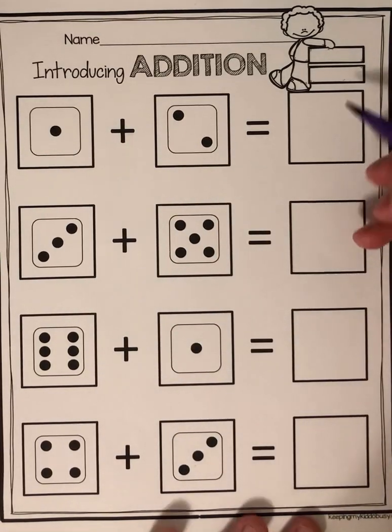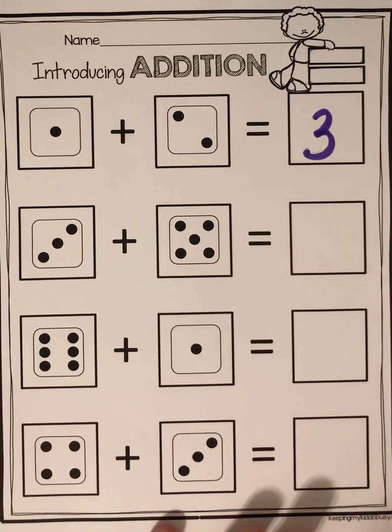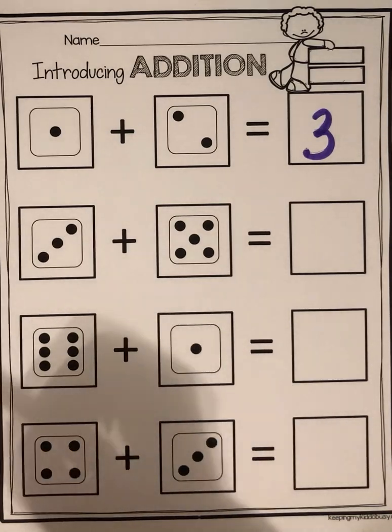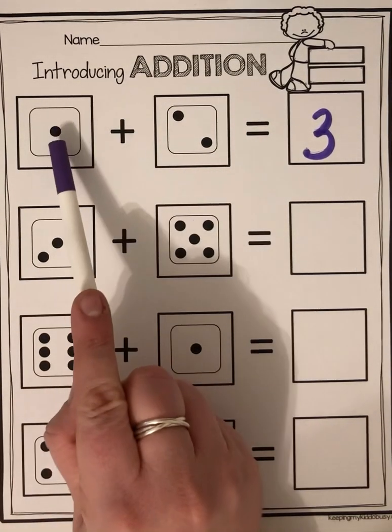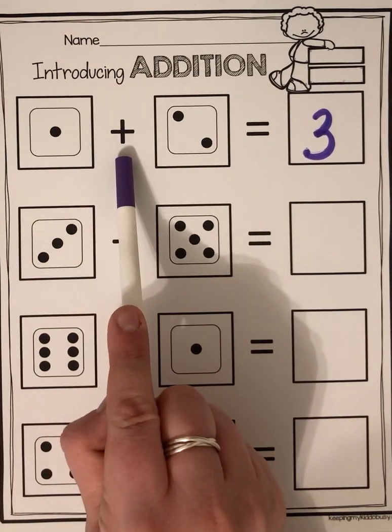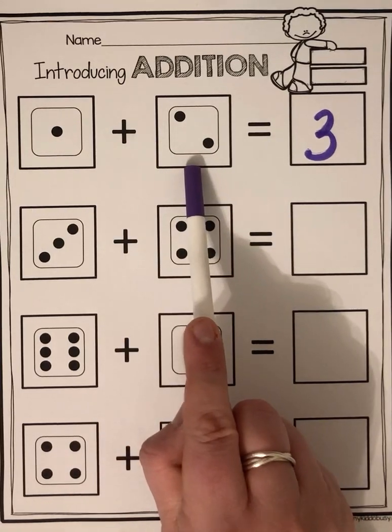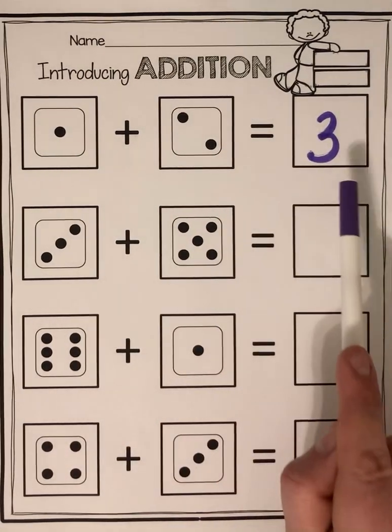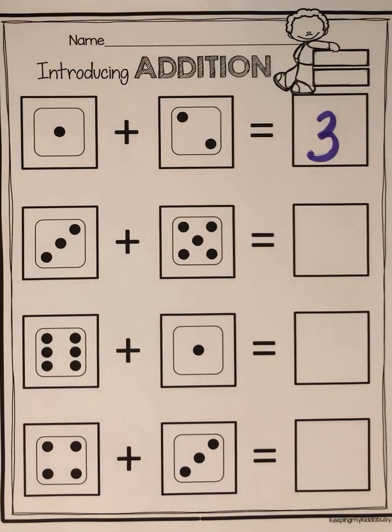If you said three, you are absolutely correct. So I'm going to write a three right here. And let's read this number sentence together. One plus two equals three. Awesome sauce.